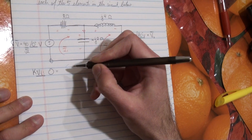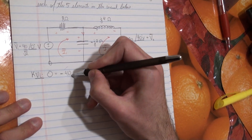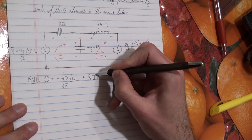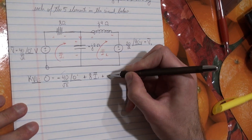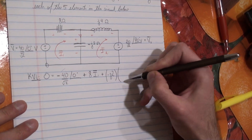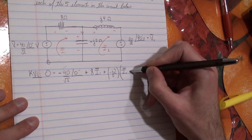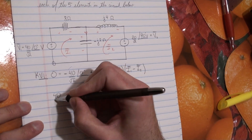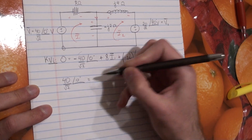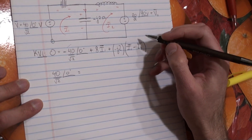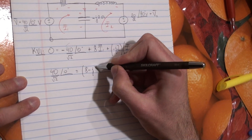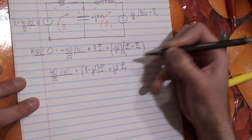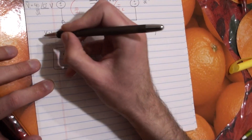KVL equals 0. Starting here, it's going to be minus 40 over square root of 2, angle 0, plus 8·I1, plus the impedance minus J2 times the current I1 minus I2, because of the direction we selected. Moving the constant to the other side and combining like terms, we get: (8 − J2)·I1 + J2·I2. This is our first equation for loop 1.